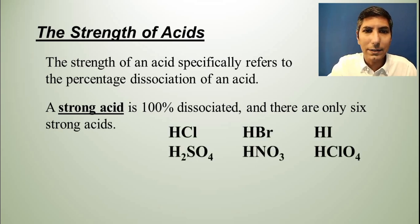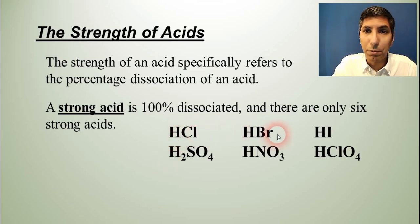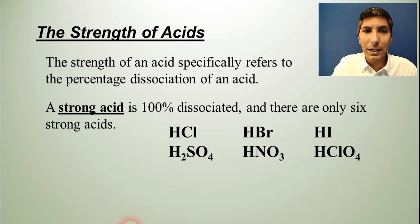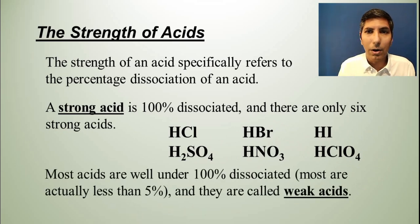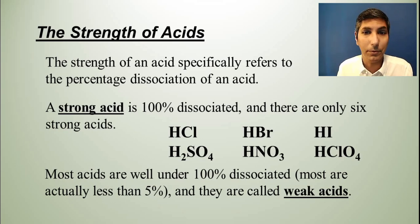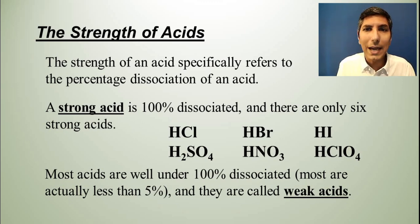These are the six strong acids you've already learned about in unit four of AP chemistry: hydrochloric, hydrobromic, hydroiodic, sulfuric, nitric, and perchloric acids. There are hundreds if not thousands of other acids, and most of those are well under 100% dissociated — in fact, most are actually under 5% dissociated. Those are the weak acids.